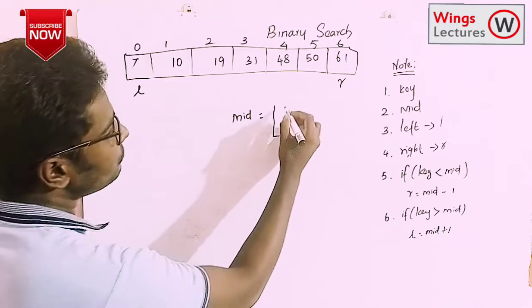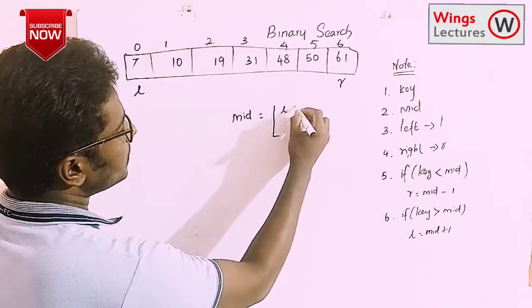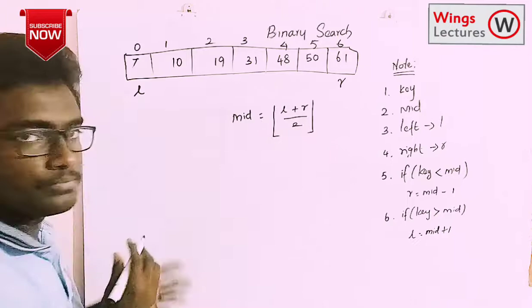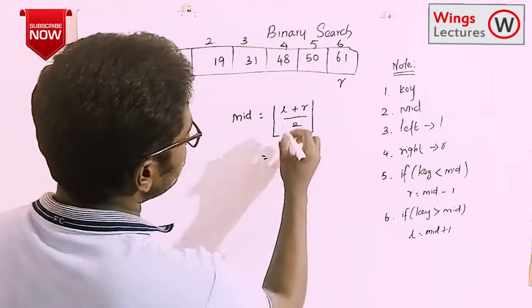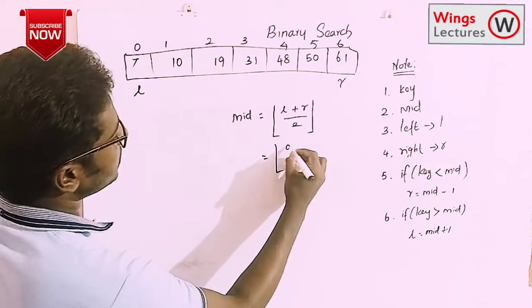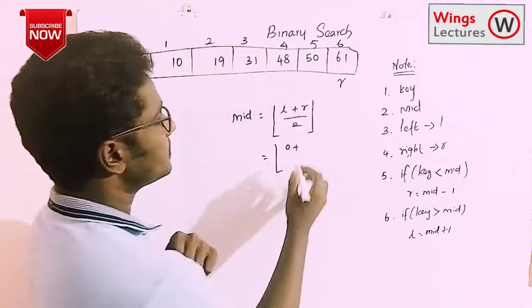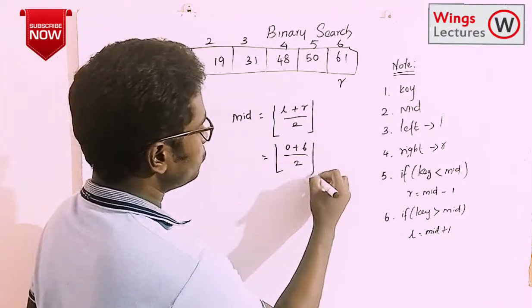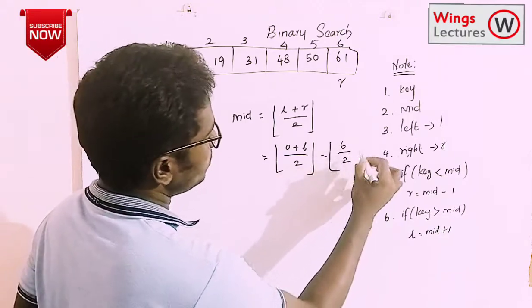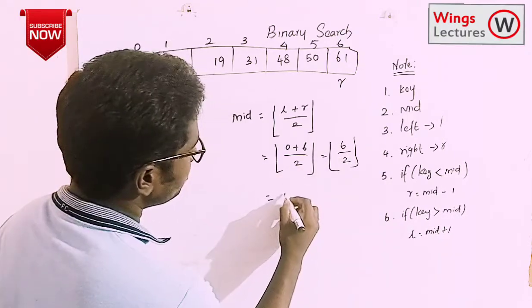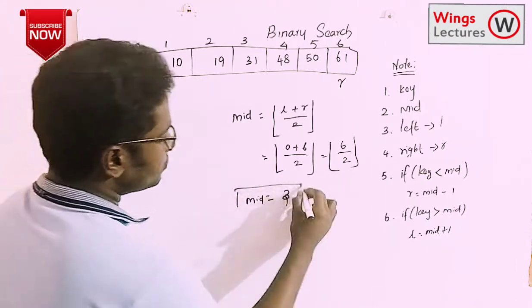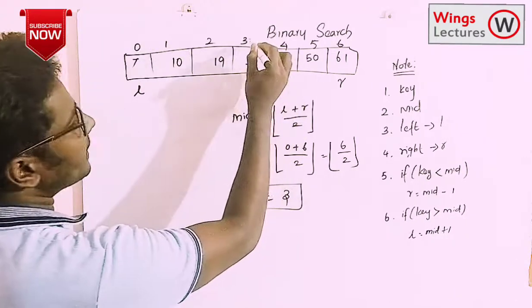The formula for calculating the mid value is: mid = floor((left + right) / 2). Applying the values: left index is 0, right index is 6, so 0 + 6 divided by 2 equals 6/2, which is 3. So the mid position is at index 3.